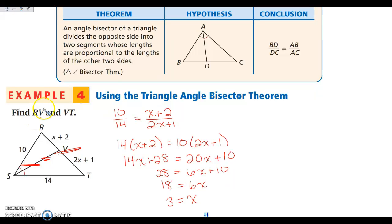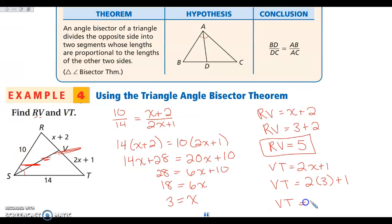So now we look back at the question. It says find the length of segment RV and the length of segment VT. So RV is going to be x plus 2. So RV is going to be 3 plus 2, which makes RV 5. Same thing for VT. VT is 2x plus 1. So VT will be 2 times 3 plus 1. So 2 times 3 is 6 plus 1 is 7. So look at this. This is 5. This is 7. If I have 10 over 14 and I divide both of those by 2, that's going to give me 5 over 7. This is already 5 over 7. Or if I go this way, like if I do 5 over 10, that's 1 half. And 7 over 14, that's also 1 half. So again, it really doesn't matter which way you go.